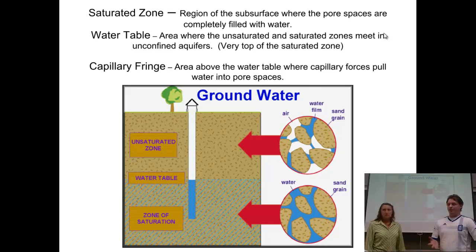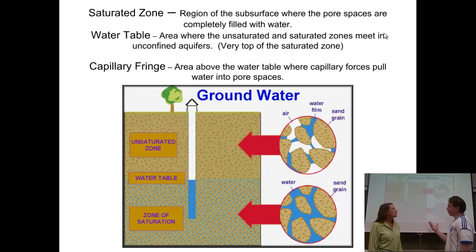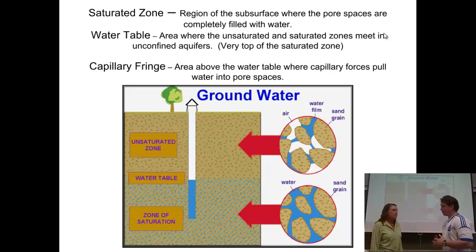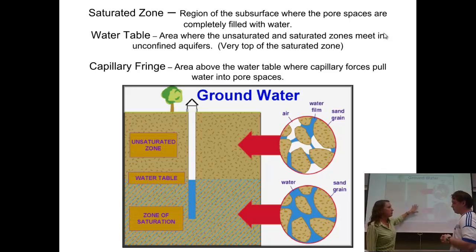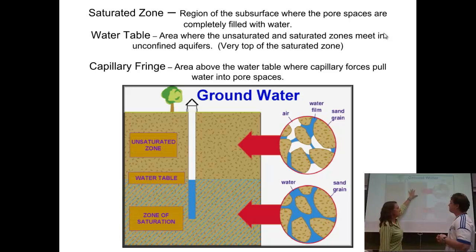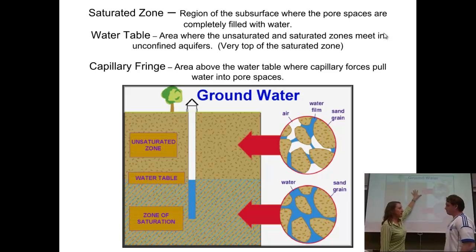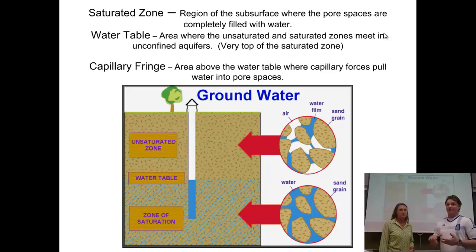Now we're defining three more terms. The water table is the line that separates the unsaturated zone from the saturated zone — it's the actual top of the saturated zone. In the saturated zone, all the spaces are filled with water. In the unsaturated zone, there are spaces in between the sediment grains or particles that could be filled but aren't right now — they might have air or some water, but they're not fully filled. The water table itself is not fixed; it actually moves.